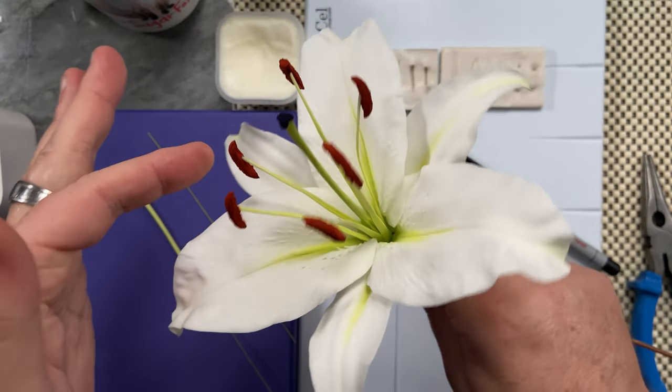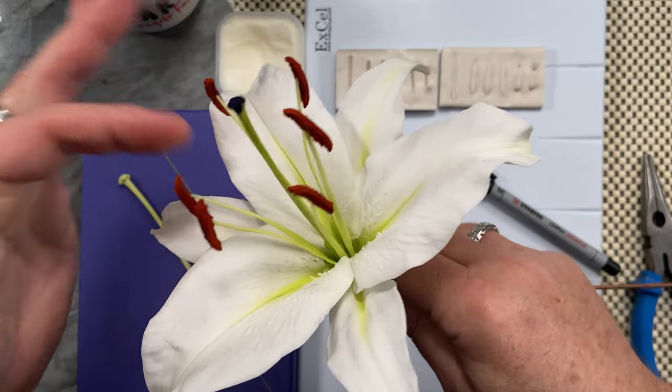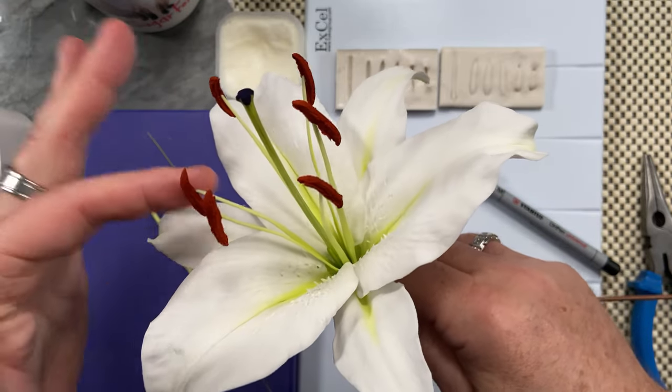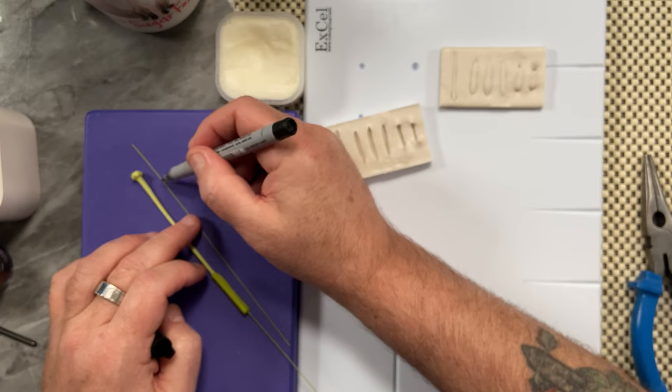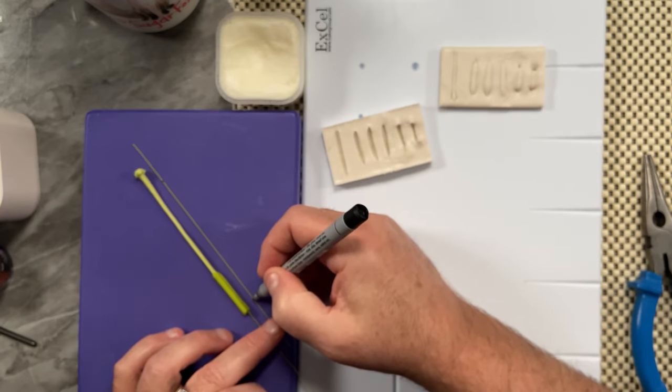To make the individual stamens, this part is the filament and this is the anther cap on the top. So probably about there, and then I want it to finish just about there.